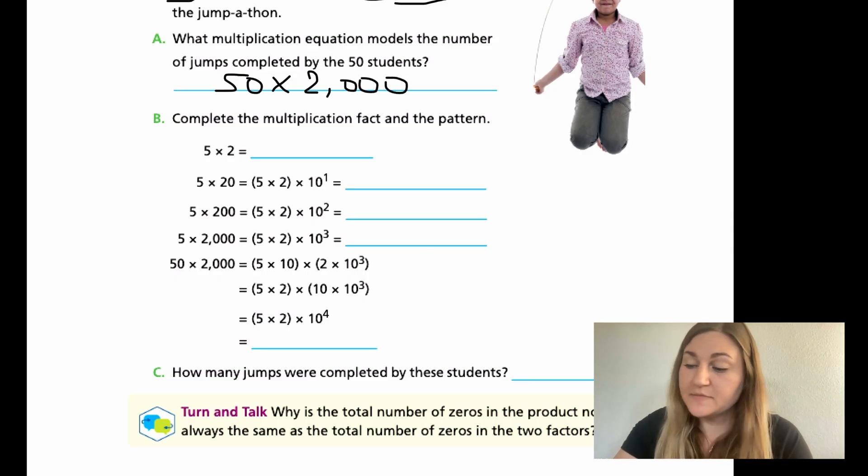Complete the multiplication fact and pattern. 5 times 2 is 10. When breaking it apart, 5 times 20 separate into 5 times 2 and 10 to the first. I'm getting 10, but my power of 10 is another zero. This answer has two zeros because 5 times 2 is 10. That zero is part of the product, not including our power of 10. Be careful. 5 times 200, so 5 times 2 times 10 to the second. My 10 times 10 to the second, adding two zeros, getting 1,000.